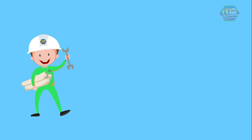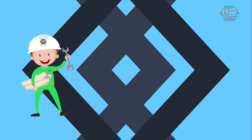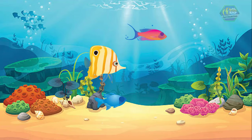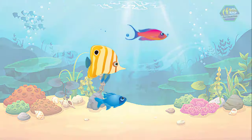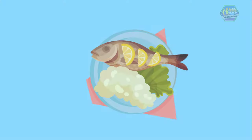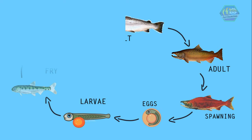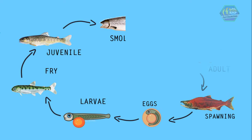Good day learners, this is Easy Engineering. For today's topic we're going to talk about the life cycle of a fish. You may have seen them in the ocean, in an aquarium, or on your dinner plate. Fish are important and fascinating animals. Like us, they have a life cycle too, where they begin and where they reproduce again.